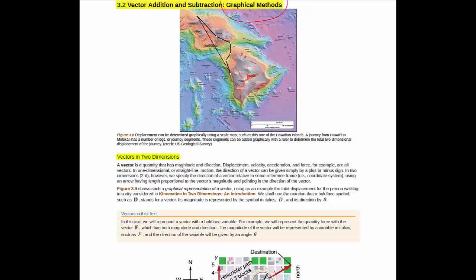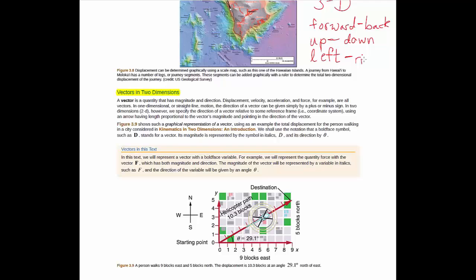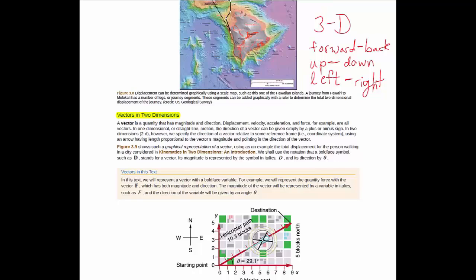The three dimensions in our world are—a dimension is a direction in which you can move. So you've got forward, back, then you have up, down, left, right. Those are our three dimensions. It turns out that most things only happen in two at a time.